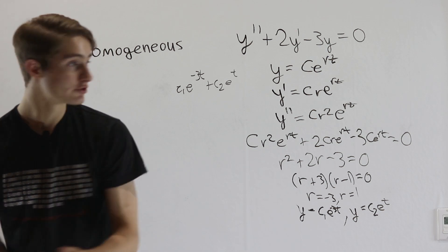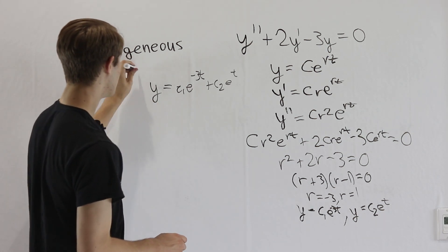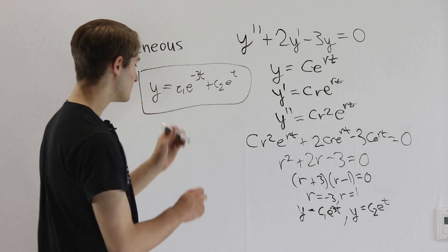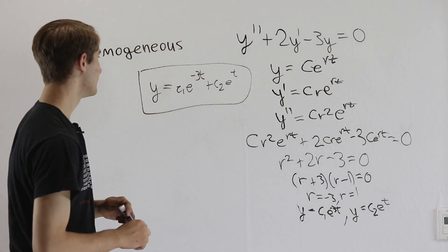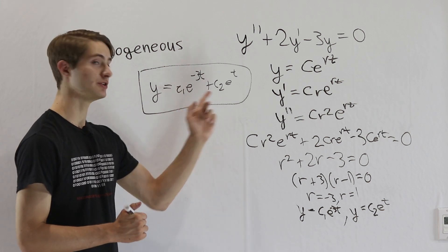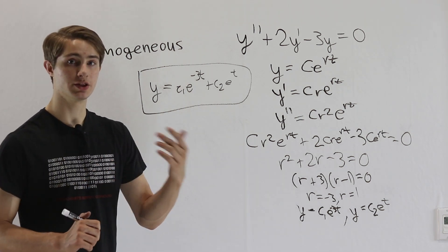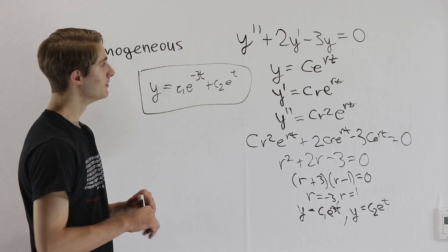So our final solution to this differential equation will be of the form y equals c1, e to the negative 3t plus c2, e to the t. And you might be asking, how can we solve for these constants? Well, the answer to that will depend on the problem that you're trying to solve.